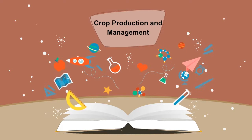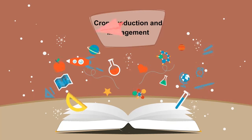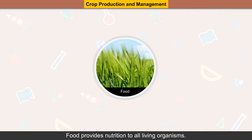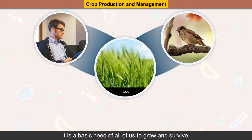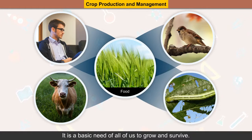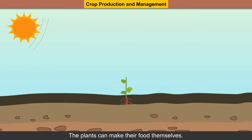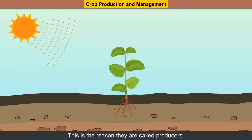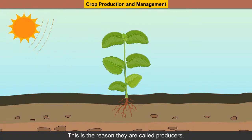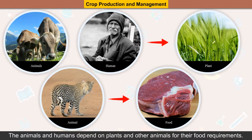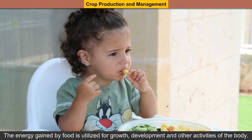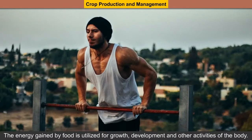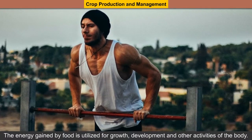Crop Production and Management. Food provides nutrition to all living organisms. It is a basic need of all of us to grow and survive. The plants can make their own food — this is the reason they are called producers. The animals and humans depend on plants and other animals for their food requirements. The energy gained by food is utilized for growth, development and other activities of the body.